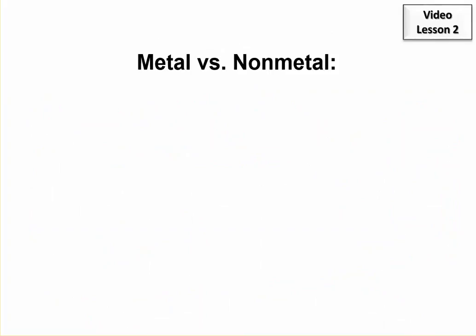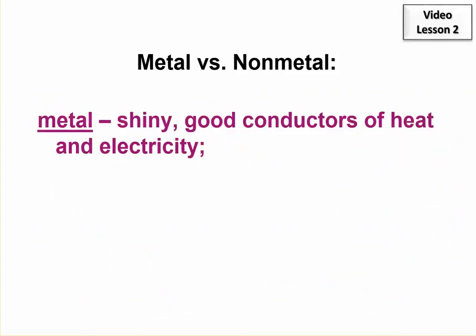Just property differences between a metal and a nonmetal. Of course, some of the physical properties you already know. They're shiny, good conductors of heat and electricity. But you need to also know that they tend to give up electrons. They don't hold onto their electrons very tightly. That's why they are good conductors.